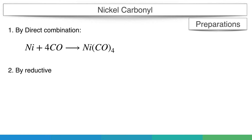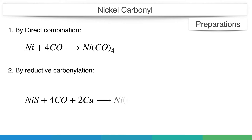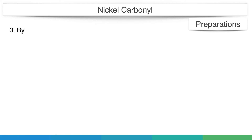Preparation method 2: By reductive carbonylation. It is prepared by treating nickel iodide or sulfide with carbon monoxide under a pressure of 200 atm and at 473 degrees Kelvin in the presence of a reducing agent like copper.